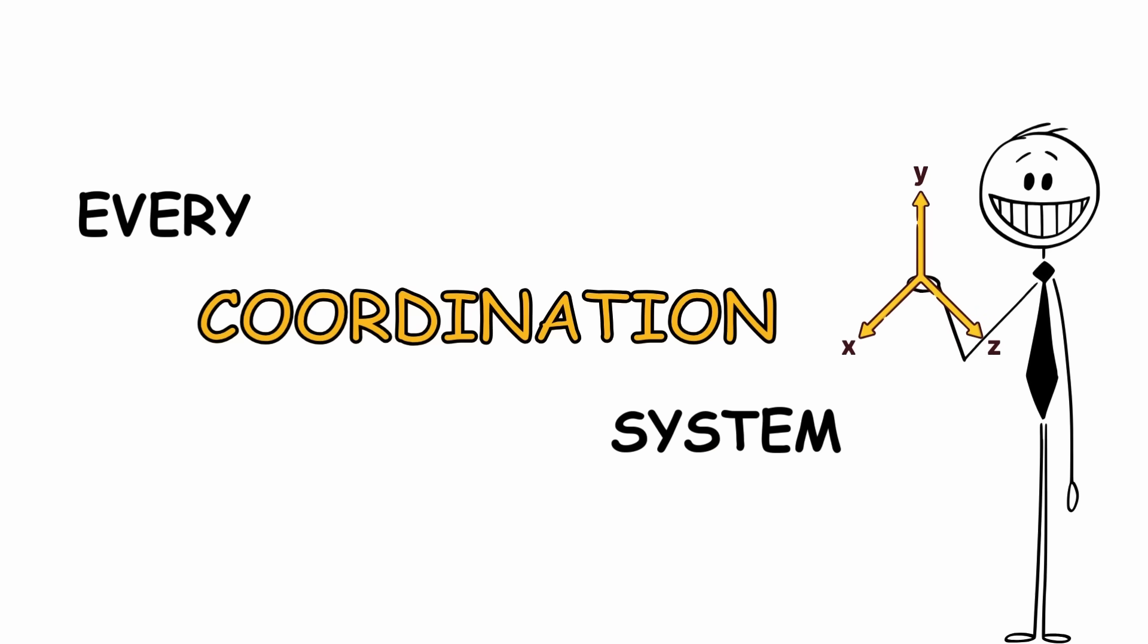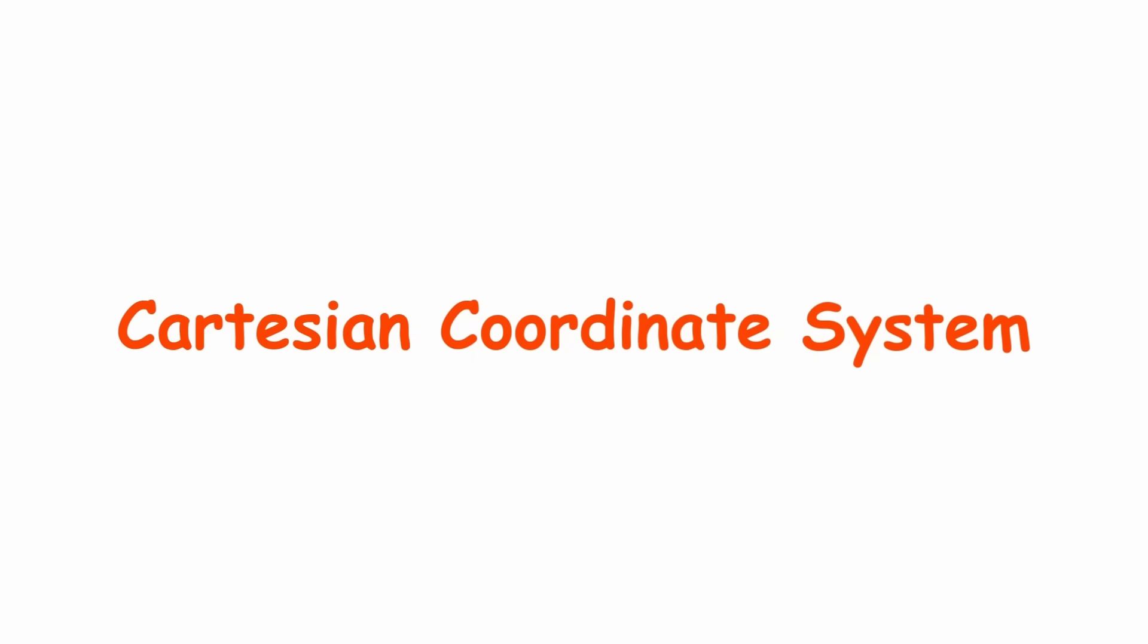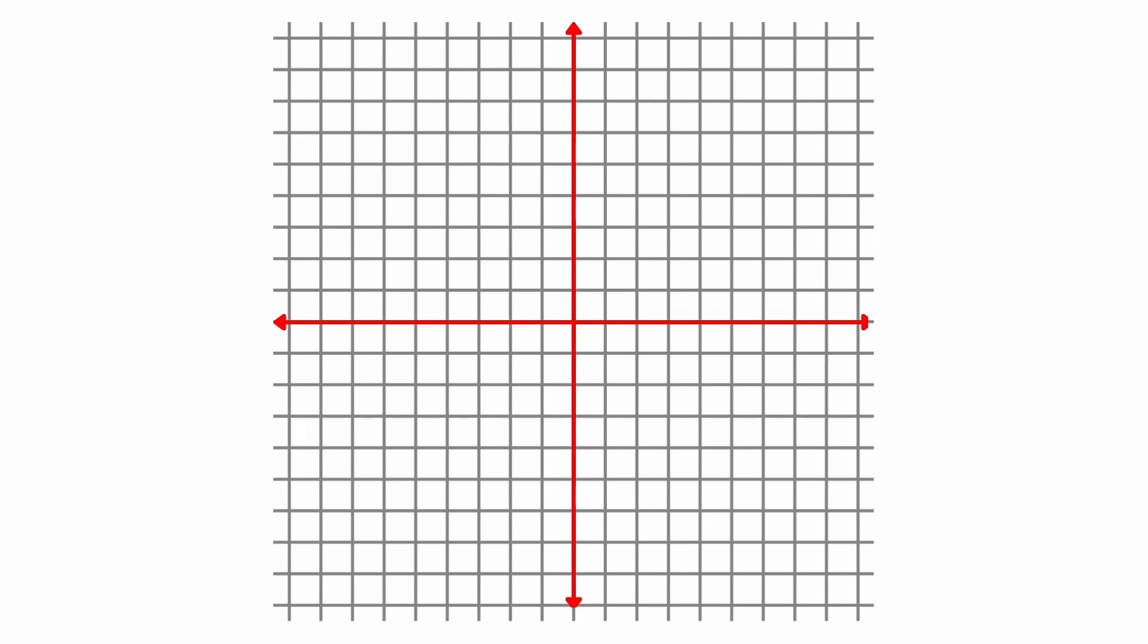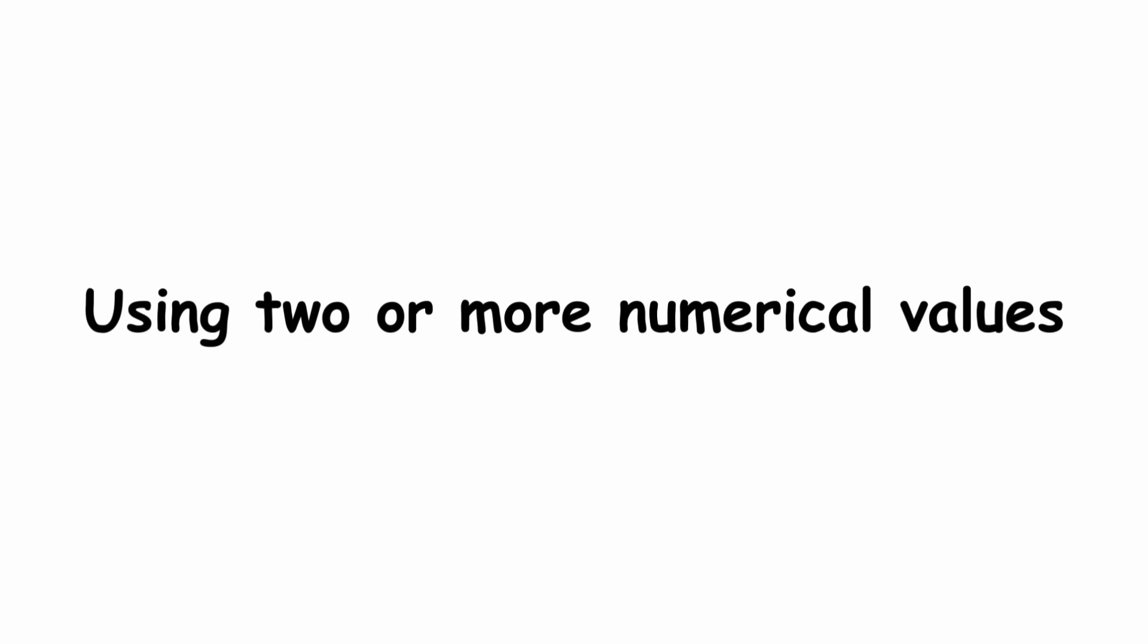Every coordinate system explained. Cartesian coordinate system. The Cartesian coordinate system is a way of representing points in space using two or more numerical values.